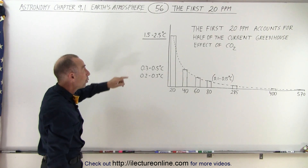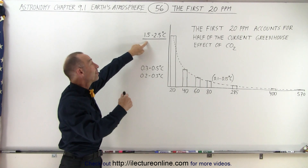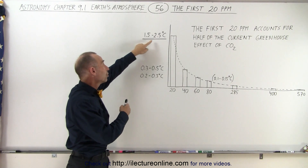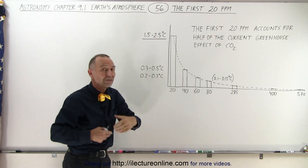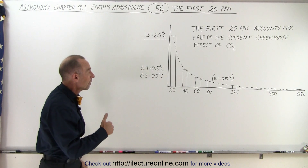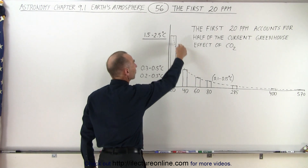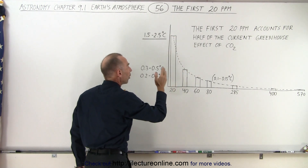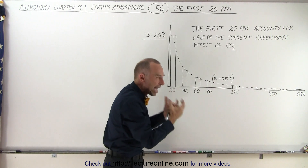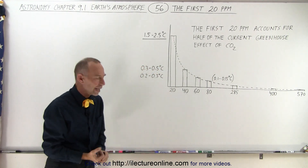That's kind of interesting. We don't quite agree on how much that first 50% is — it can be anywhere from 1.5 to 2.5 degrees increase in the temperature of the lower troposphere. But we do realize that the first 20 parts per million already contribute half the greenhouse effect of all the carbon dioxide in the atmosphere.